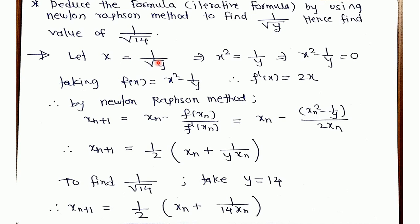Let x = 1/√y. Squaring both sides gives x² = 1/y. Rearranging: x² - 1/y = 0. Taking f(x) = x² - 1/y, the derivative with respect to x is f'(x) = 2x, since 1/y is a constant and goes to 0. Applying Newton-Raphson, xₙ₊₁ = xₙ - f(xₙ)/f'(xₙ), and substituting and rearranging, we get xₙ₊₁ = (1/2)(xₙ + 1/(y·xₙ)). This is the iterative formula for 1/√y.